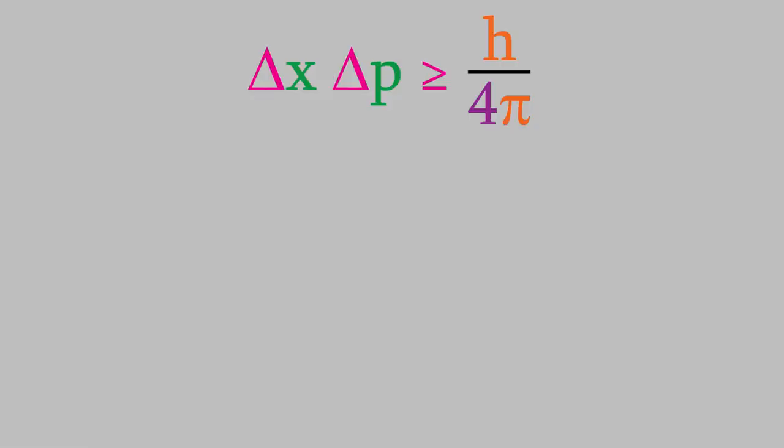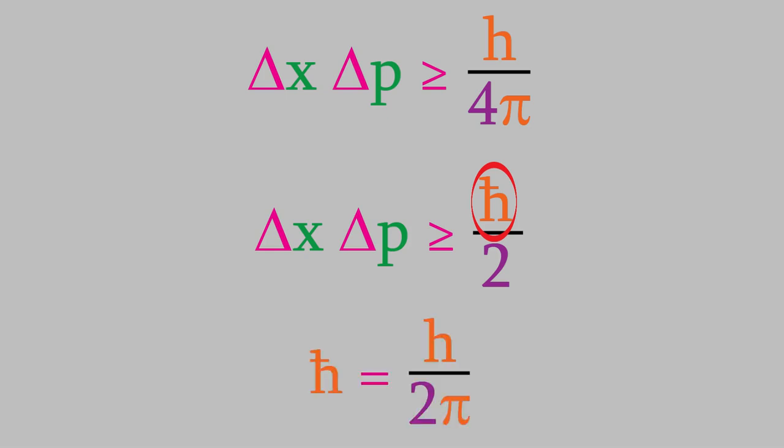This is also a good time to introduce a new symbol that we'll use very often in this course. The quantity on the right side of the inequality is often written this way. This symbol is called h bar, and it's equal to Planck's constant, divided by 2 pi.